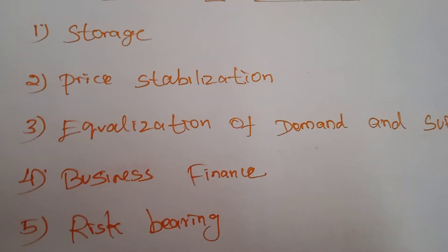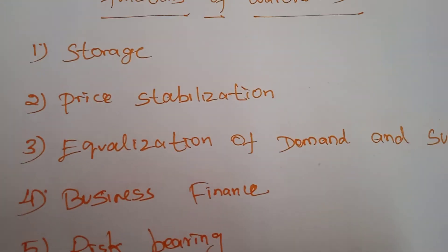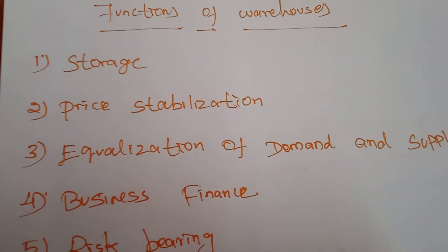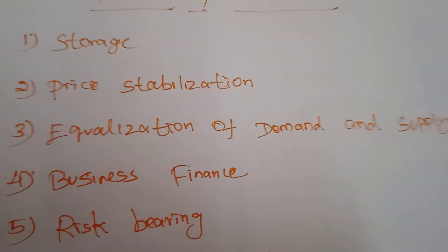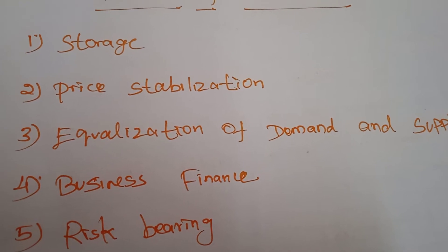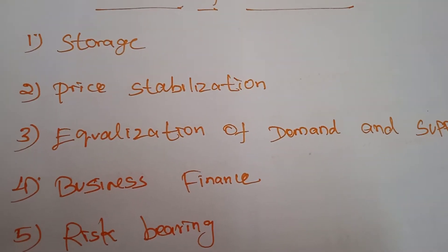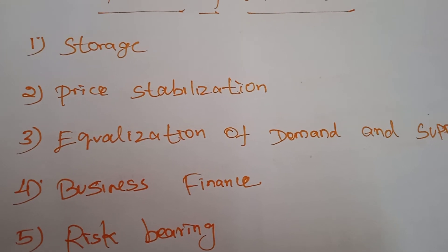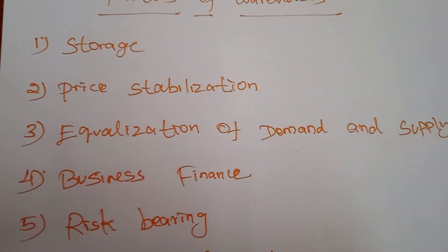It acts as a cushion to absorb price fluctuations and supplies goods at more or less uniform prices throughout the year. Within a short time, the supply of commodities will reach the market, so because of that the price will not increase. The price will always be stabilized throughout the year.